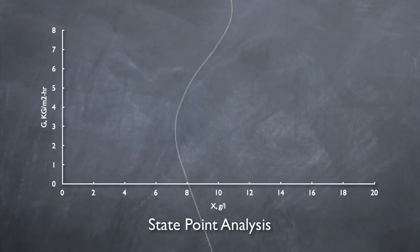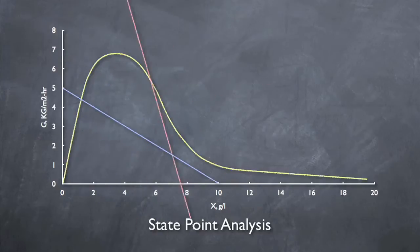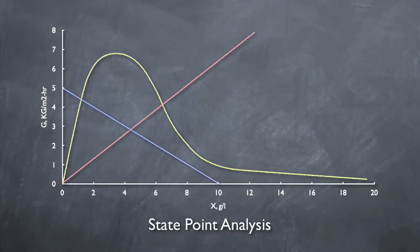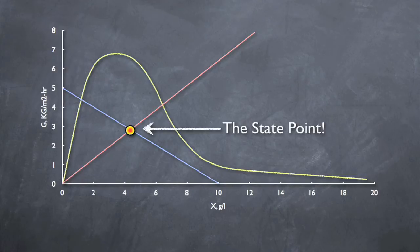Putting all the pieces together, we have our full state point diagram. So, how do we use it? We start by defining the actual state point. This is the point where the overflow rate line and the underflow rate line intersect. To ensure proper clarification, we want to make sure that this line falls underneath the settling curve.